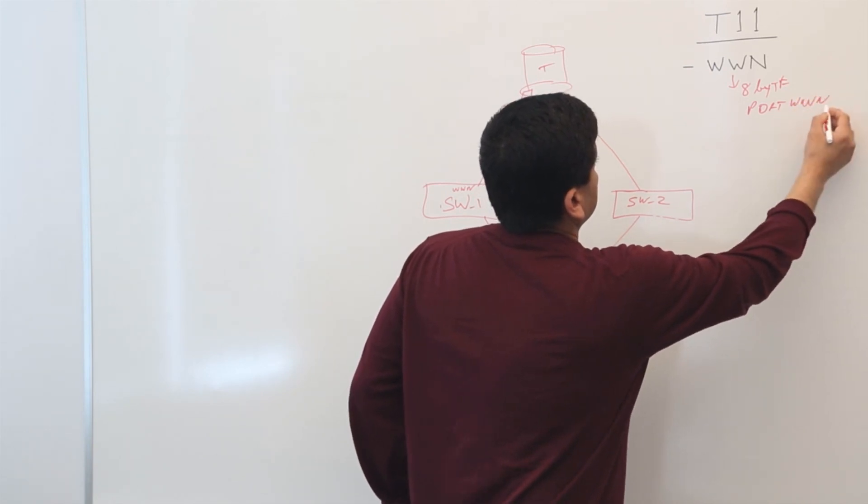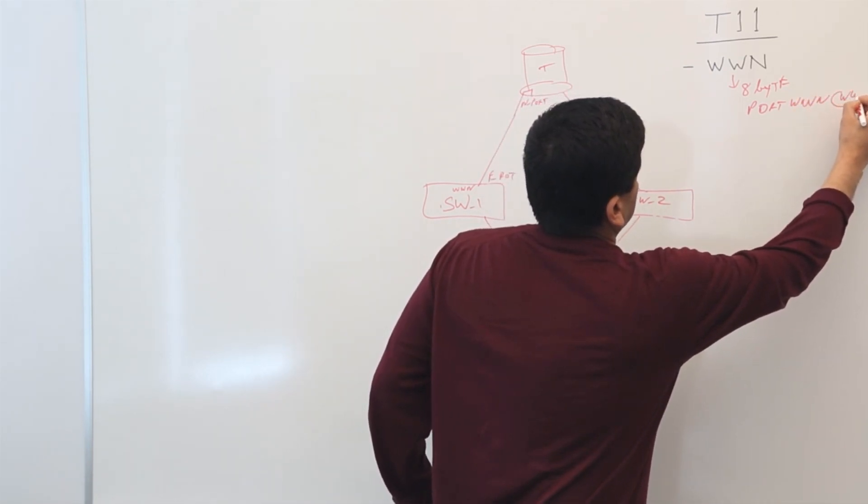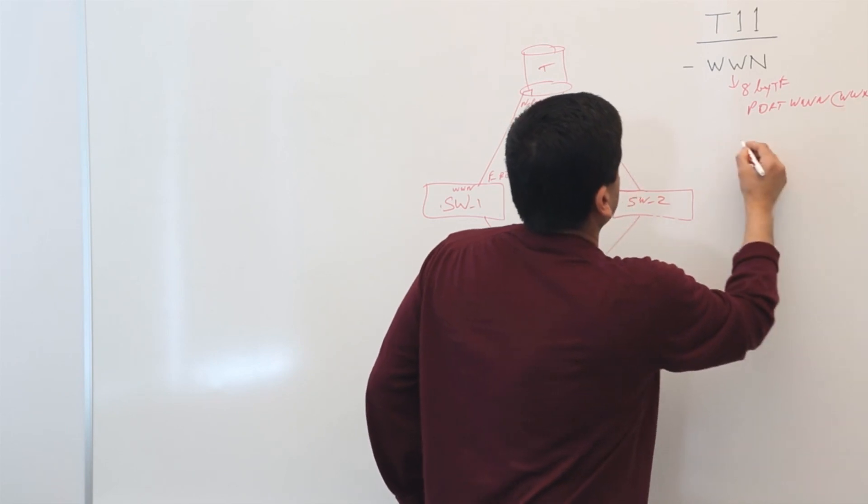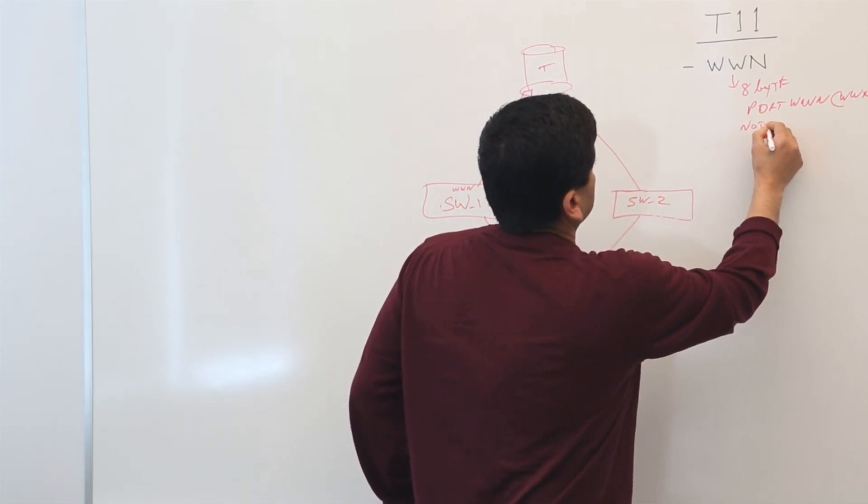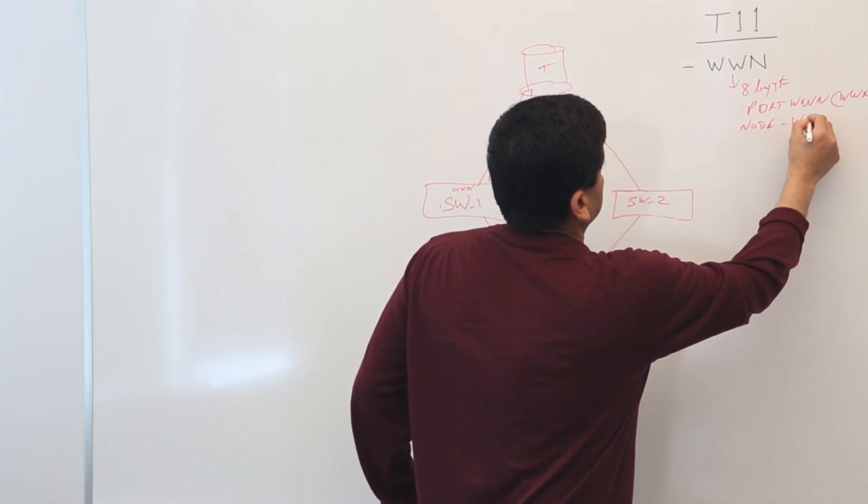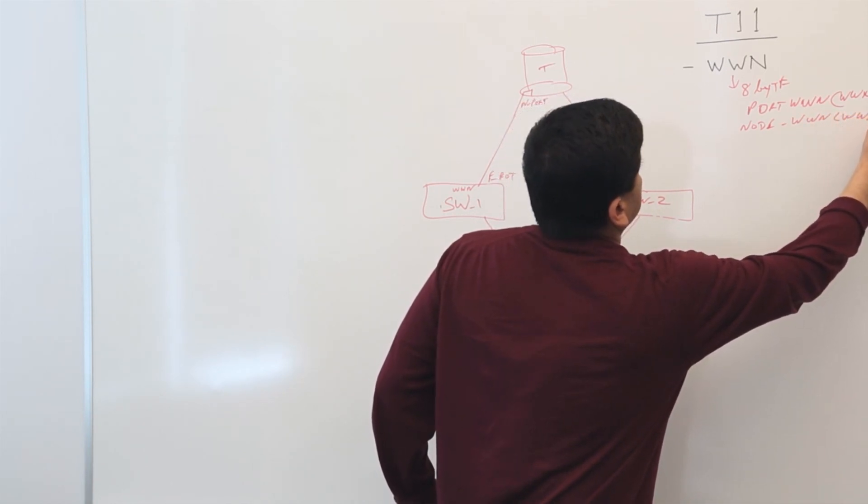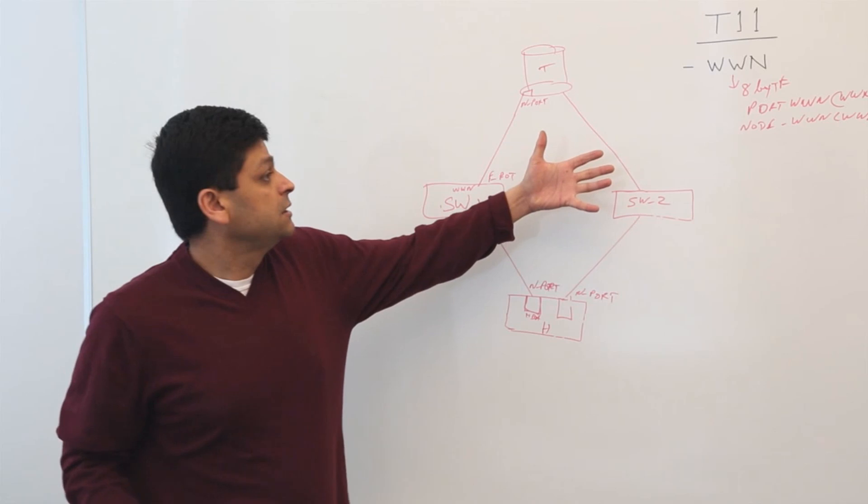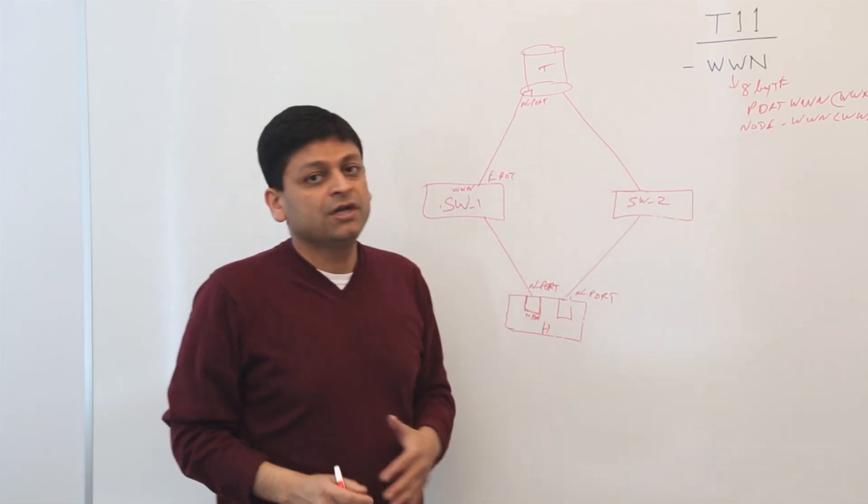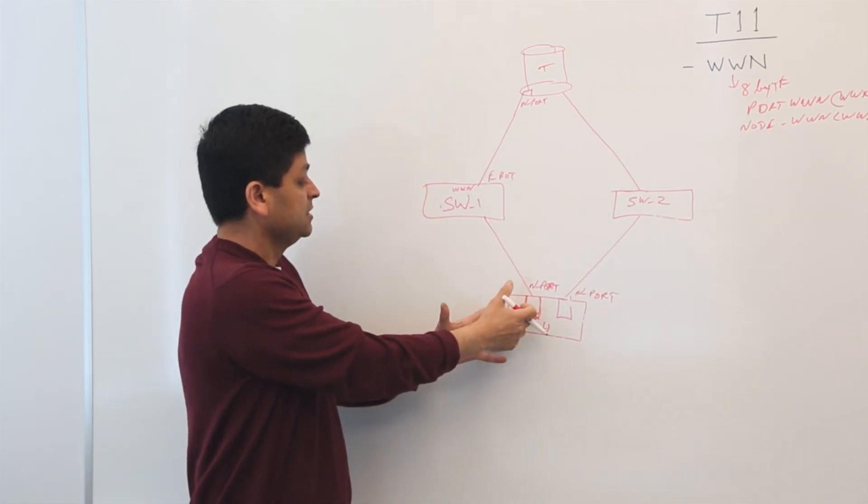Or a node WWN, which is WWNN. The difference between a node and a port WWN, as you can see, there is an HBA. HBA gets a WWN of a node WWN.